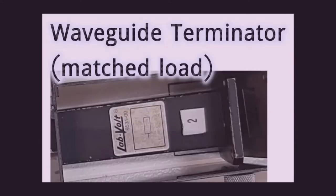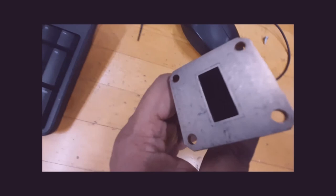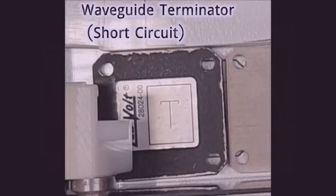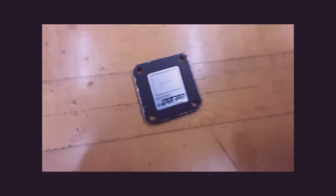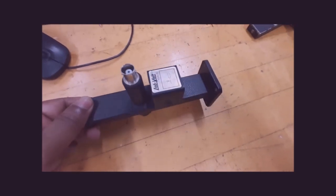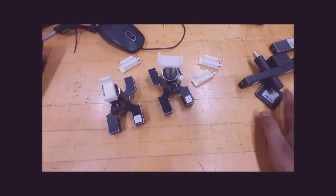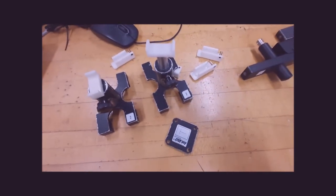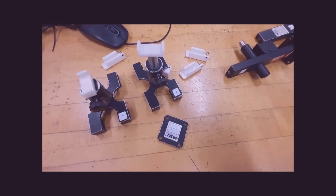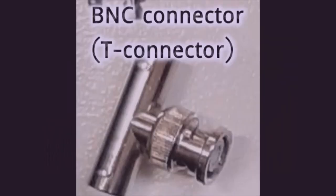A waveguide must be terminated with a short circuit or a matched load — except the crystal detector and the thermistor mount, which have closed ends. All other components must be terminated with a terminator as suggested by the experimental setup. Additional components include the diode detector, the support on which the setup is placed, plastic connectors used to assemble the devices, and a BNC or T-connector used to connect the oscilloscope cable.